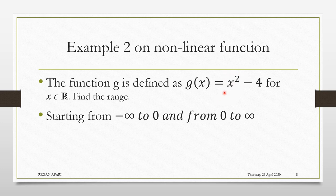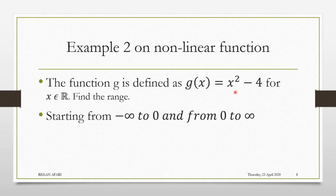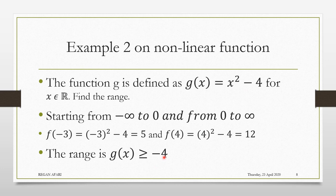Whether it is a negative number or a positive number, you are going to get a positive result because x is squared. Any number other than 0 will make this part positive. But if you put 0, you get 0 squared minus 4, which is negative 4. Any other number you put will give an answer greater than negative 4. This tells you that the minimum value you can get is negative 4. Hence, the range of the function is f of x greater than or equal to negative 4.